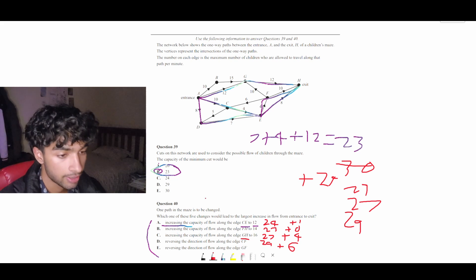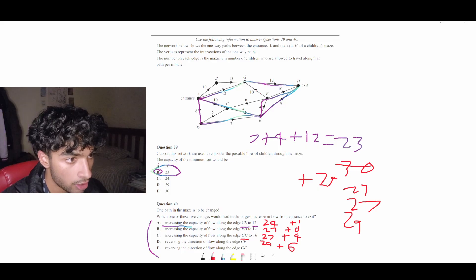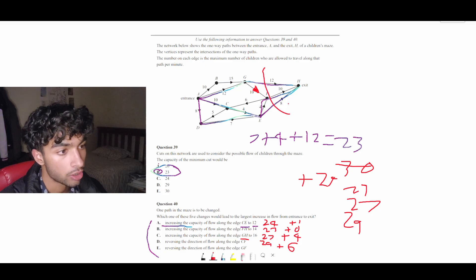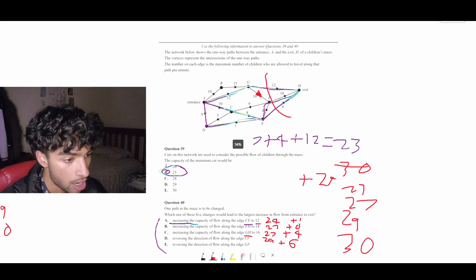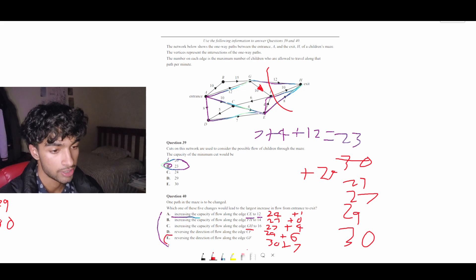And then we're going to check the last option, which is to reverse the direction along the line GF. So we're going to go here and switch the direction this way. That looks like it would give a big result. So that means we're forced to go this way, but that is also another big result, which means that this is probably going to be the minimum cut. And that is 12 plus 10 plus 8 is 30. So that 30 is now a plus 7 increase. So therefore, the answer is E.